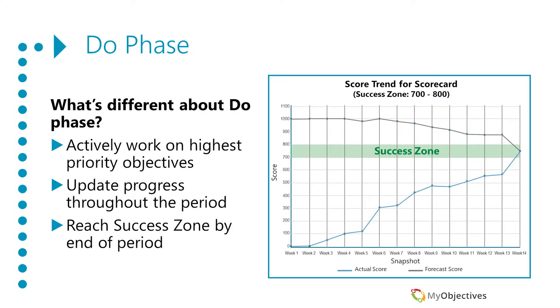Typically, everyone will actively be working on the highest priority objectives. Throughout the period, they'll be updating their progress with status notes. And the goal is to drive your score up into the success zone by the end of the period.